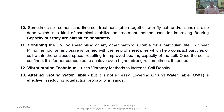Method 11 is confining the soil by sheet piling or any other method suitable for a particular site. In the sheet piling method, an enclosure is formed with the help of sheet piles, which help compact particles of soil within the enclosed space, resulting in improved bearing capacity. Once the soil is confined, it is further compacted to achieve even higher strength if needed for that particular structure at the site.